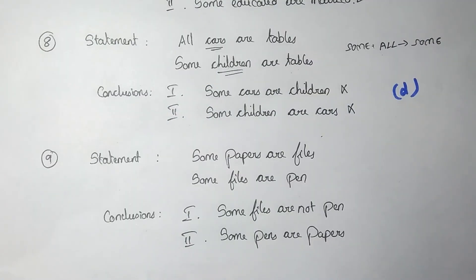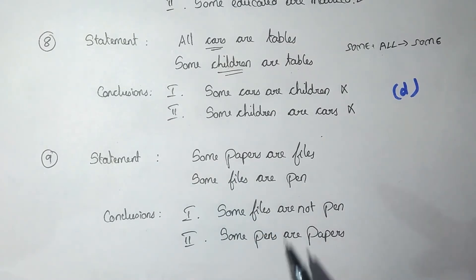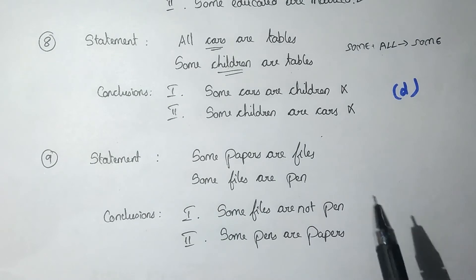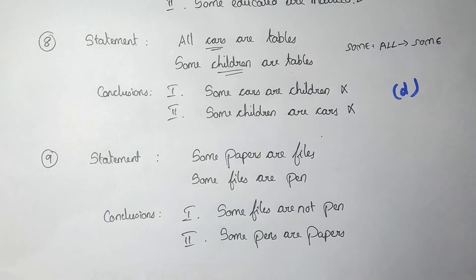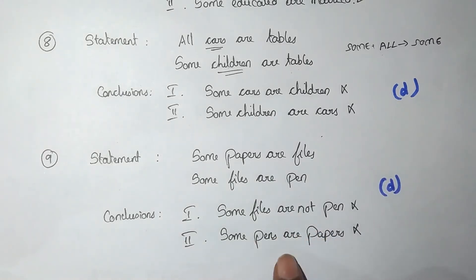Statement: Some papers are files. Some files are pen. Conclusion 1: Some files are not pen. Conclusion 2: Some pens are papers. Since the rule is Some plus Some — there is no valid combination rule for Some plus Some. Neither conclusion 1 nor conclusion 2 follows. The answer is option D.